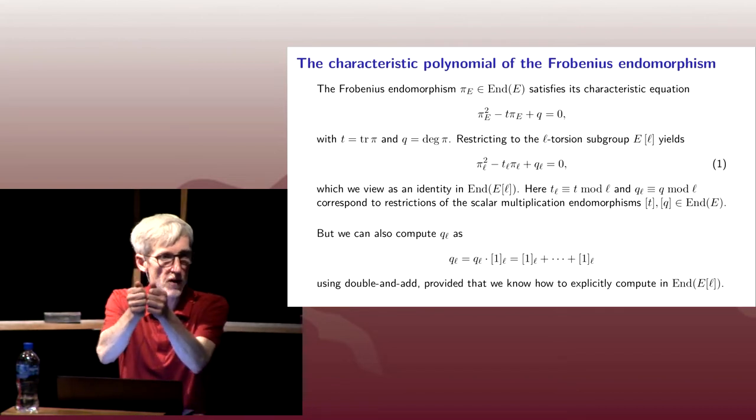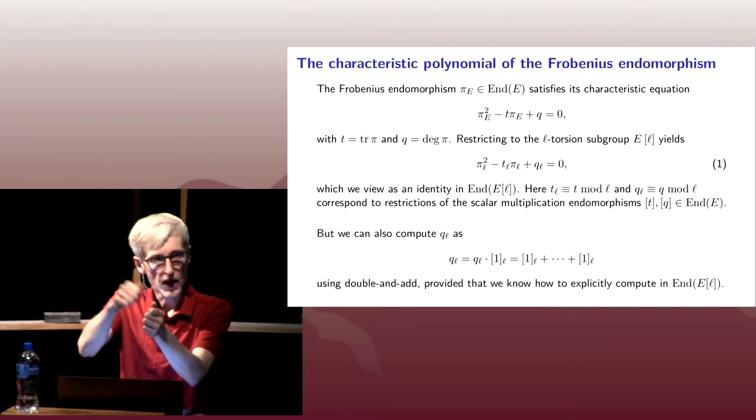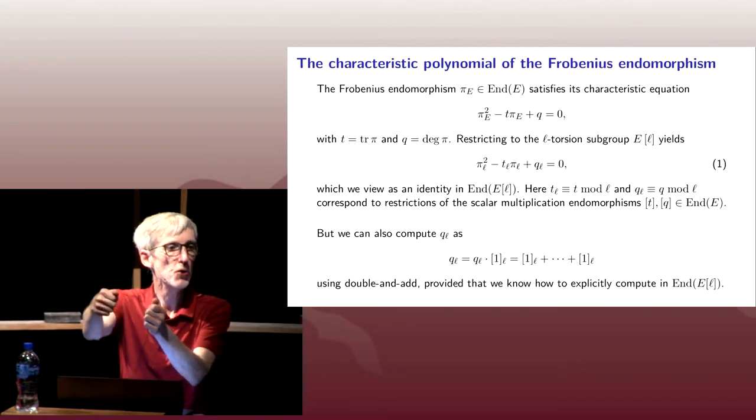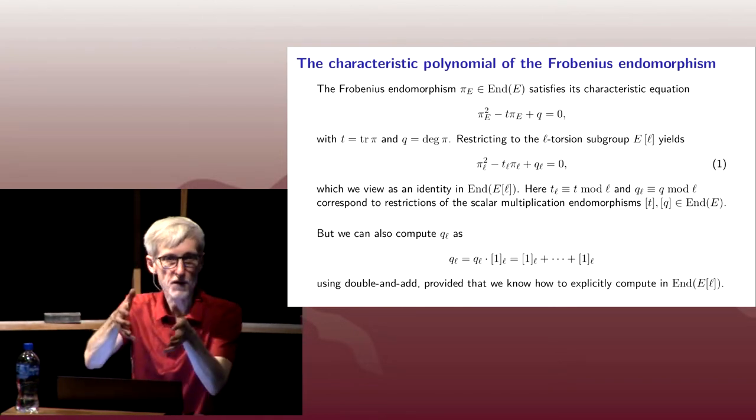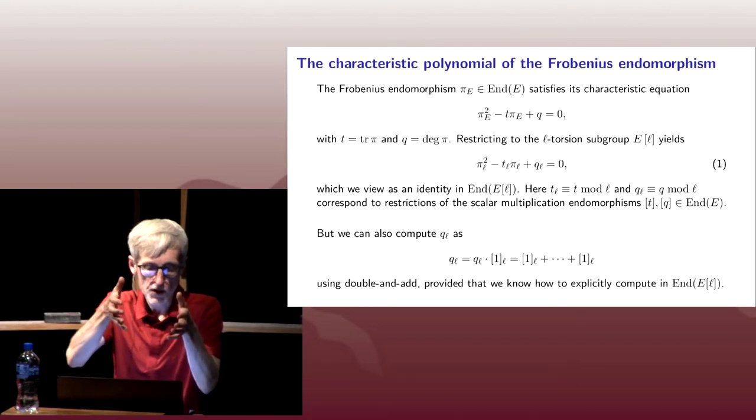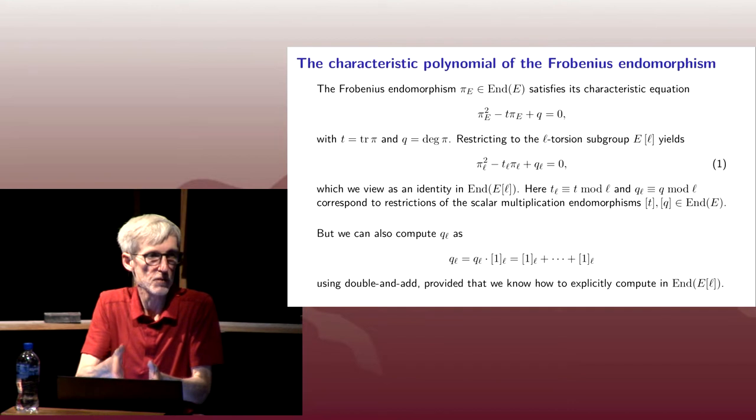If I add a point to itself on the elliptic curve, I'm really executing the multiplication by two endomorphism. Scalar multiplication by m corresponds to a morphism. If you think of the endomorphisms, they're a ring. Z is our initial object in the category of rings.